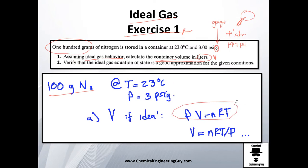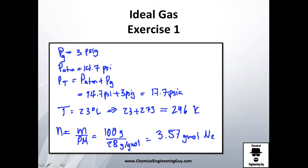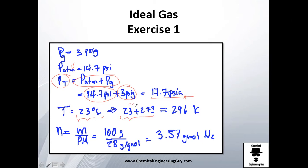PV equals nRT — we're looking for volume, so dividing both sides by pressure gives V = nRT/P. For the total absolute pressure, you take atmospheric pressure plus gauge pressure, which gives 17.7 psi. For absolute temperature, if you have it in Celsius, add 273 to convert to Kelvin, giving almost 300 K.